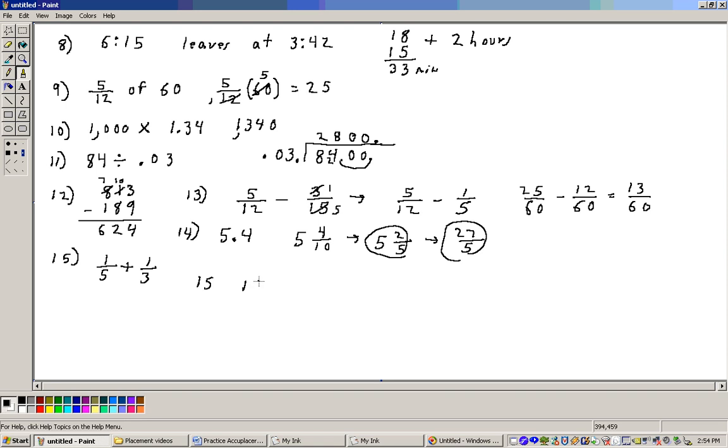Get a common denominator, which is 15. 5 goes in there three times. 3 times 1 is 3. 3 goes in there five times. 5 times 1 is 5. So that's eight-fifteenths. He spent eight-fifteenths of his money.